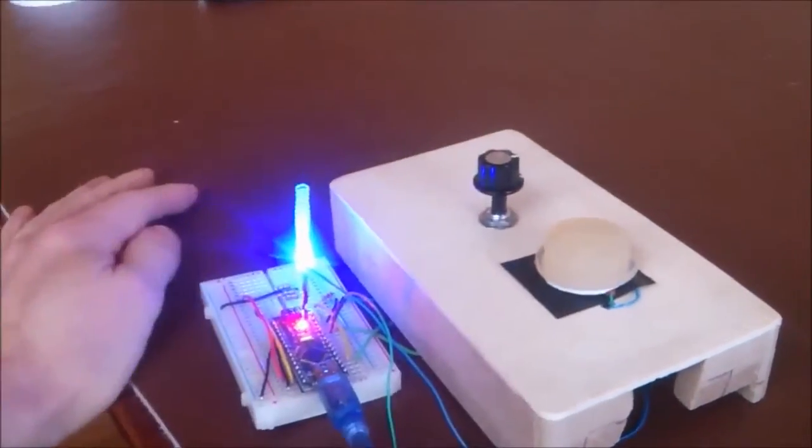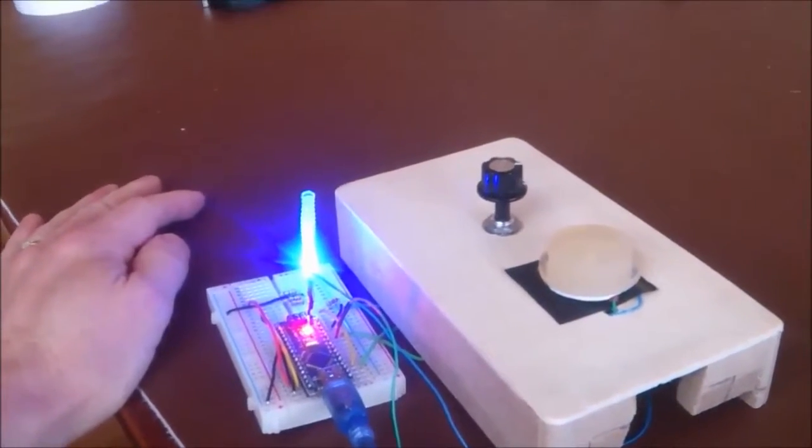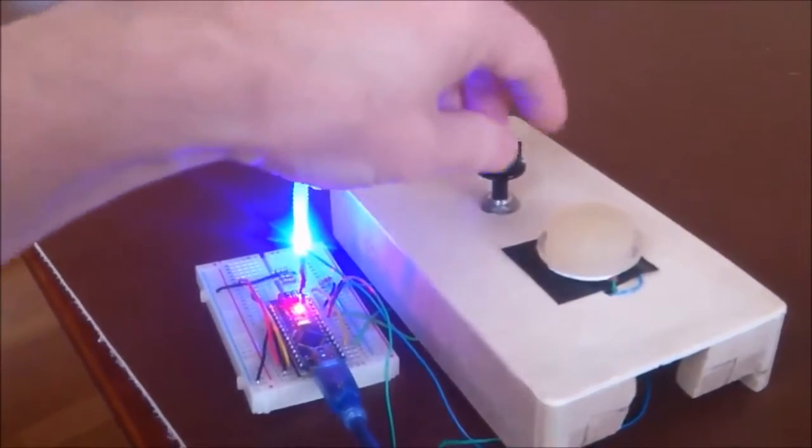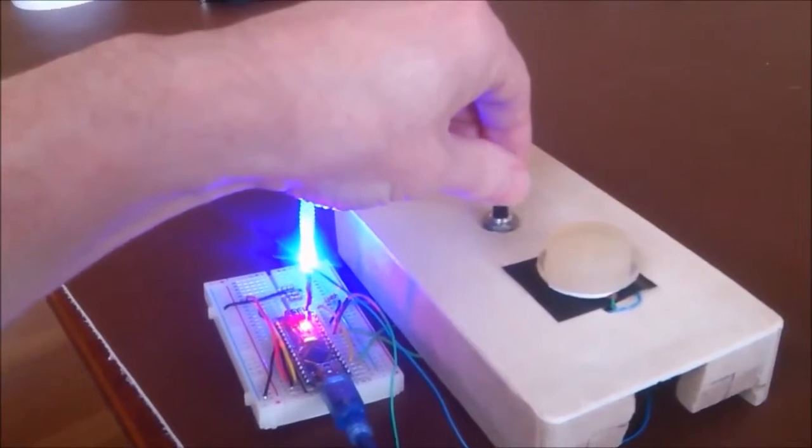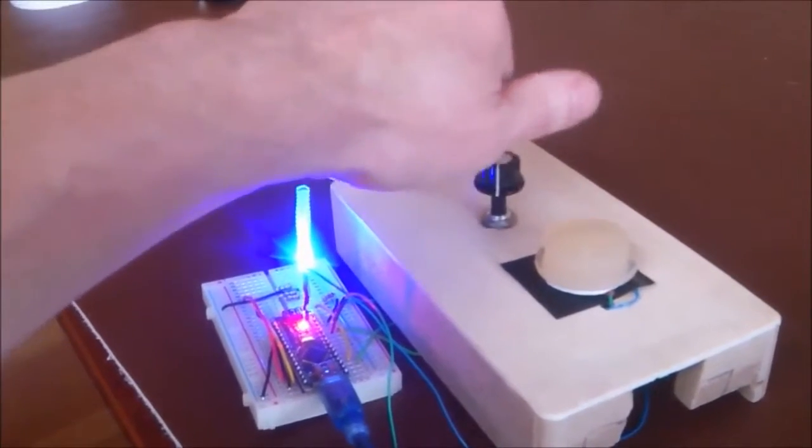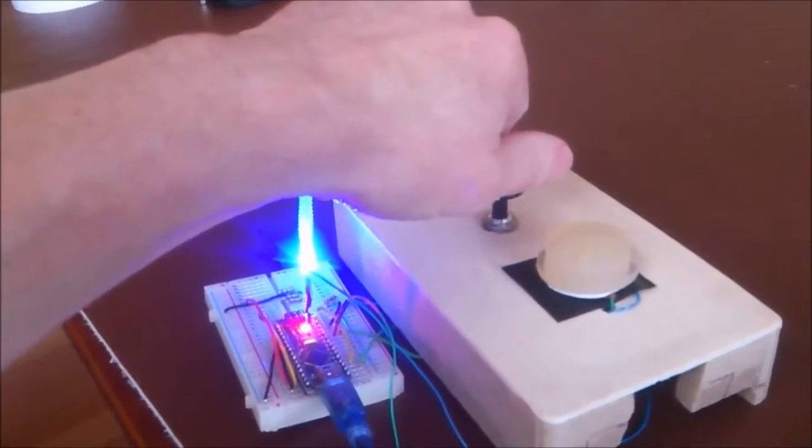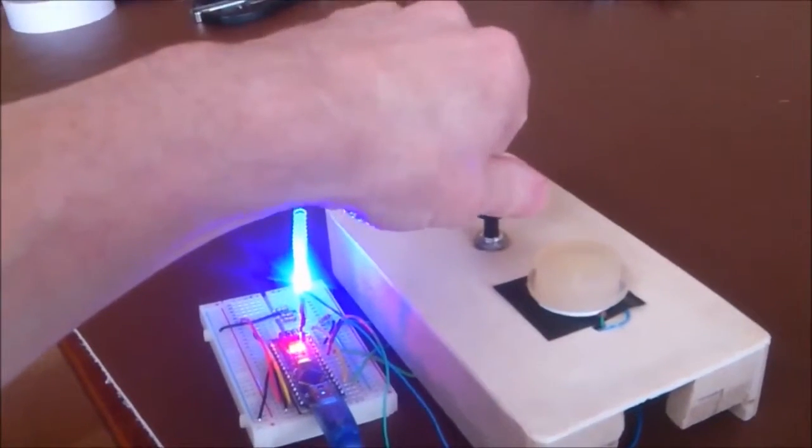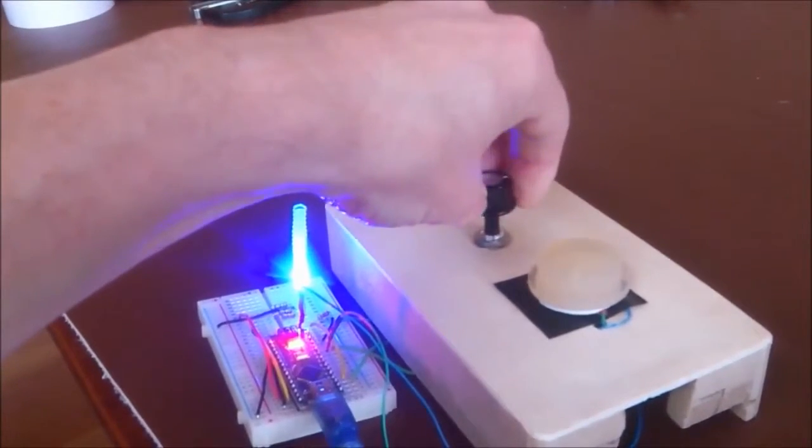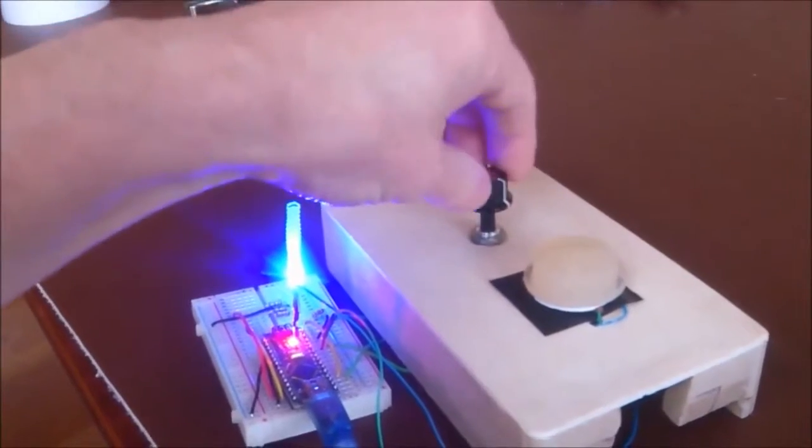And then the blue pot controls the duration of the grains, between 30 milliseconds and one second.